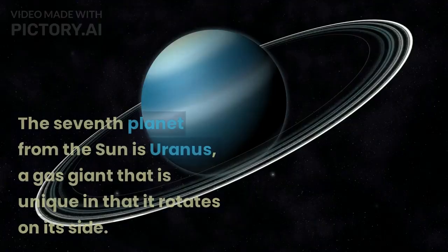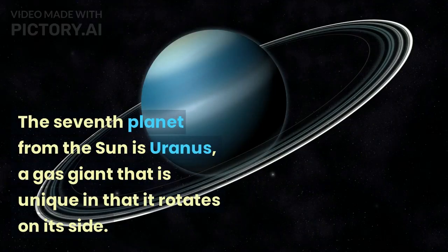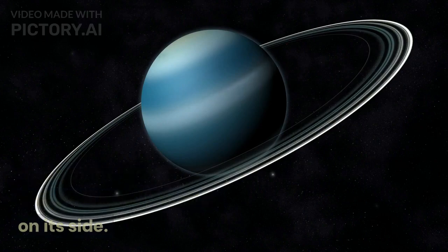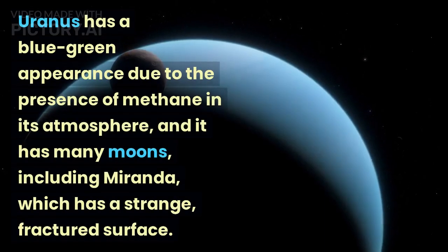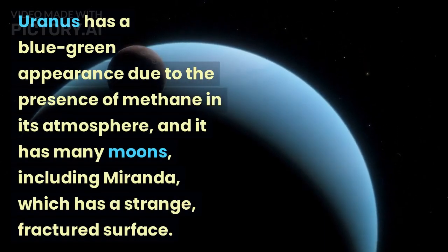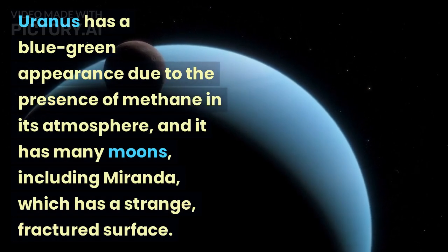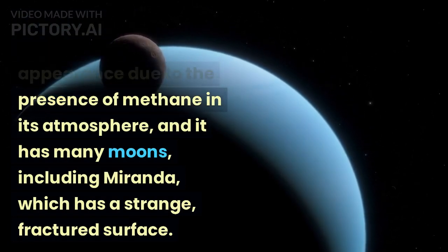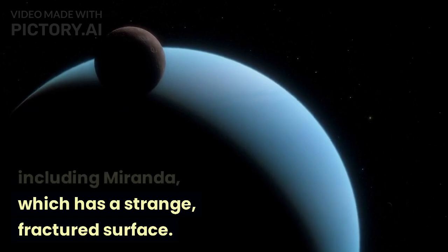Uranus. The seventh planet from the sun is Uranus, a gas giant that is unique in that it rotates on its side. Uranus has a blue-green appearance due to the presence of methane in its atmosphere, and it has many moons, including Miranda, which has a strange fractured surface.